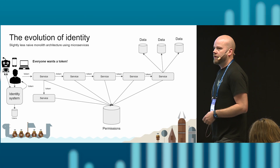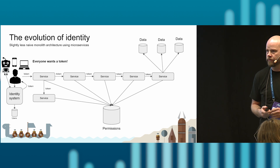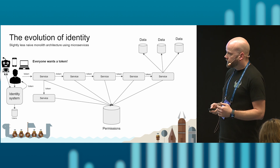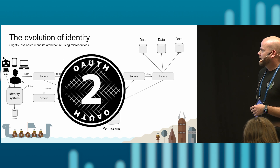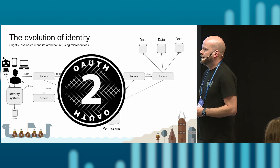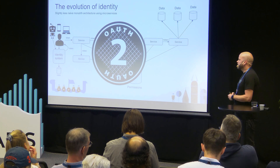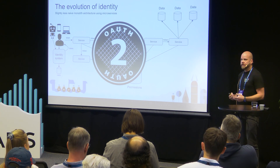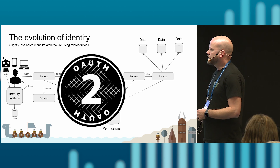And of course, everyone wants a token — it's the keys to the kingdom. We have users, devices, other services, API integrations, and so on. So how are these tokens obtained? Malcolm touched on this: OAuth 2 is established as the de facto protocol for these kinds of flows, whether you're a human or a machine. OAuth defines both interactive flows for humans and non-interactive flows for clients, allowing everyone to get a token since that's what we need for access.